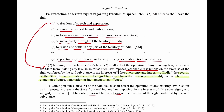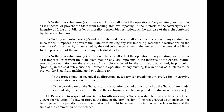For the right to assemble under clause (b), the restrictions are: sovereignty and integrity of India, and public order. For forming associations or unions, the grounds are sovereignty and integrity of India, public order, and morality. For the right to reside and settle, restrictions are in the interest of general public or for protection of interest of scheduled tribes.